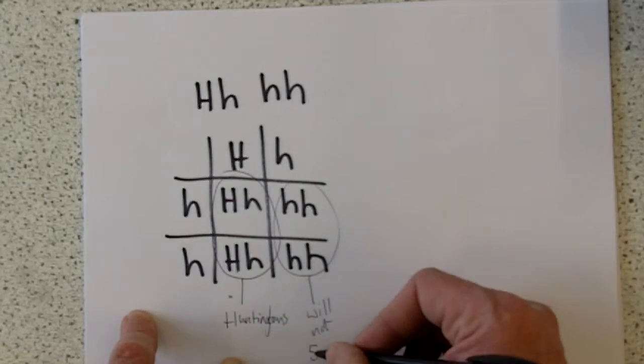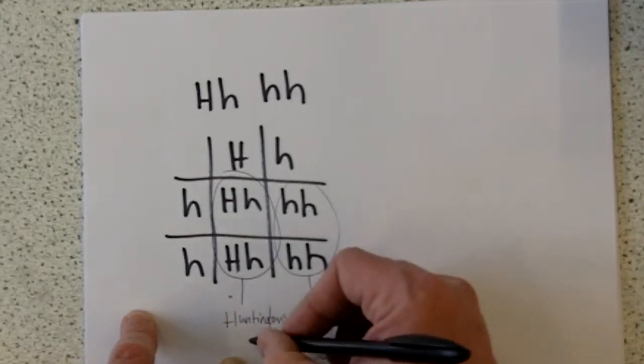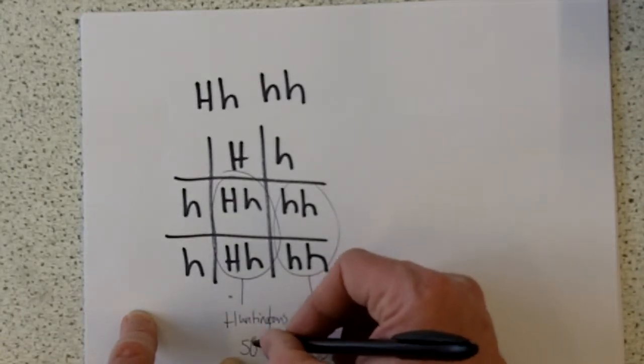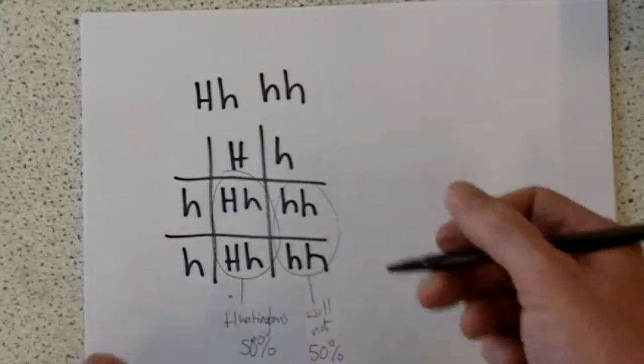So essentially, there is a 50% chance, or 2 in 4 chance that you'll get it, or a 50% chance that you won't get it.